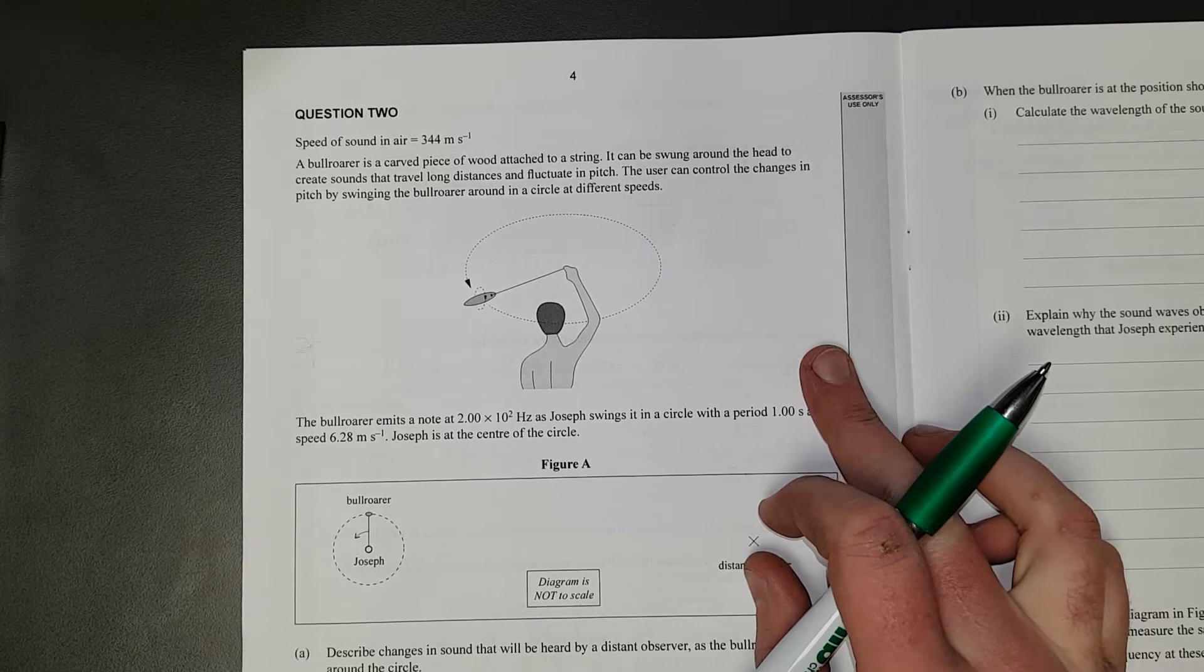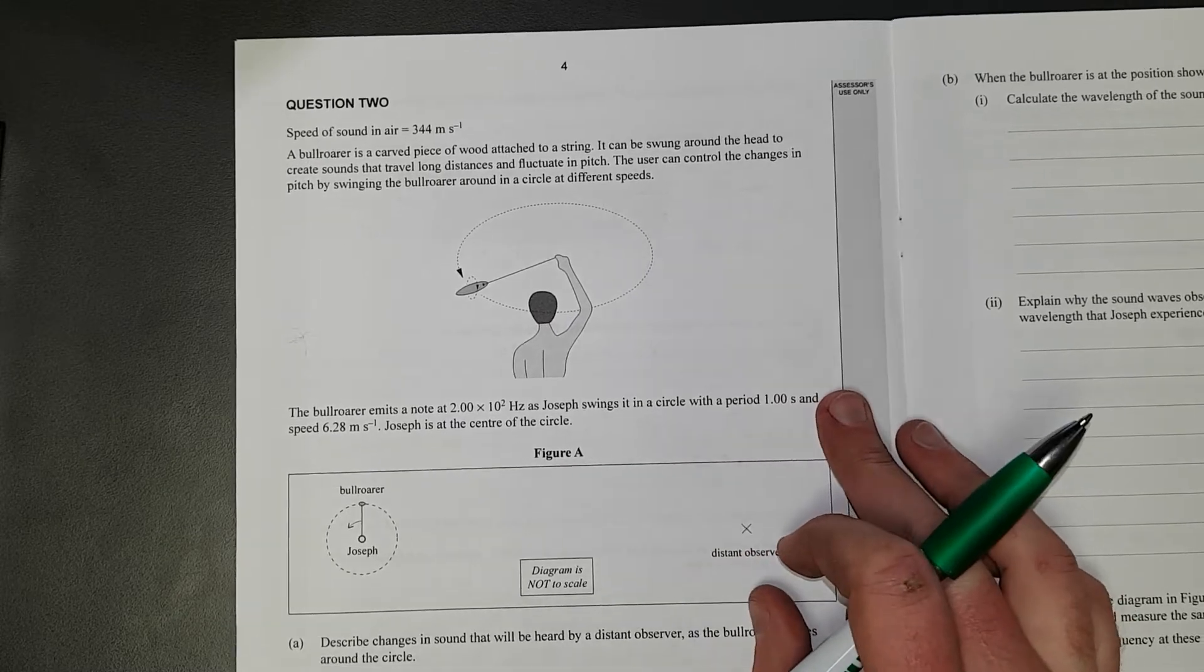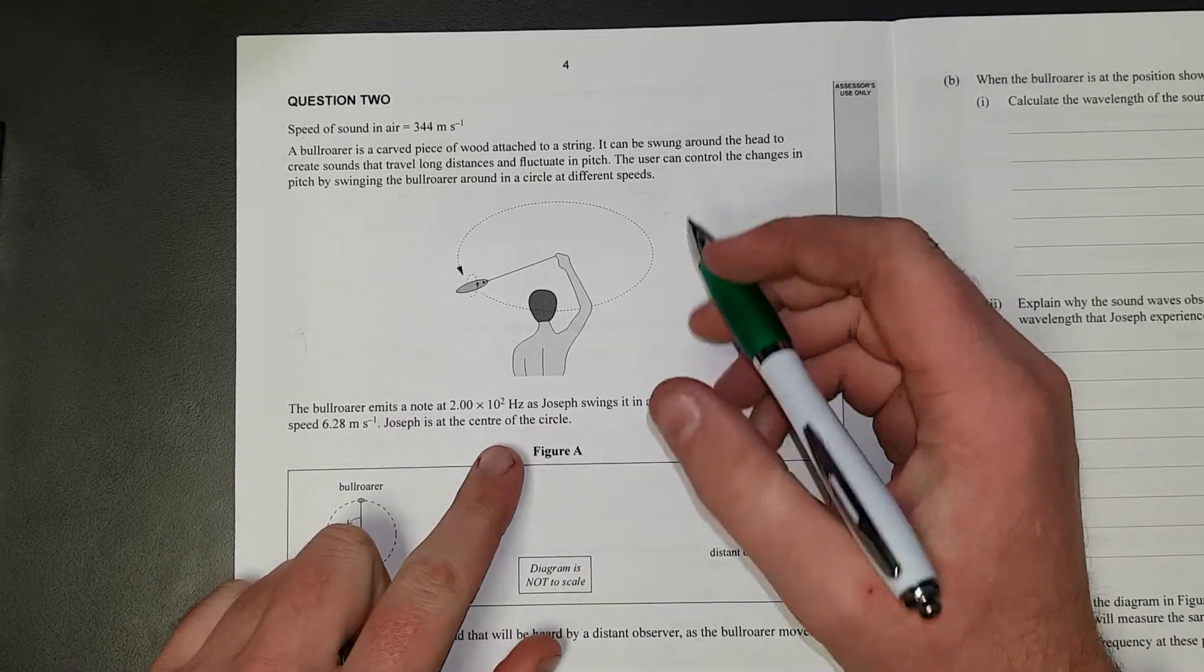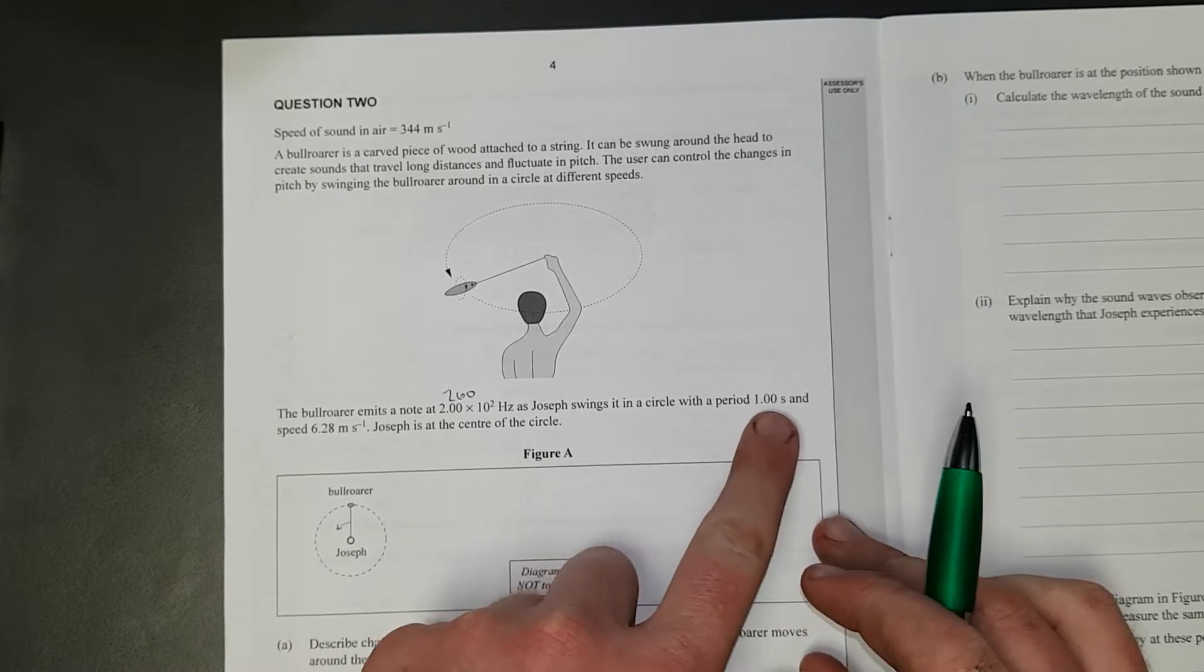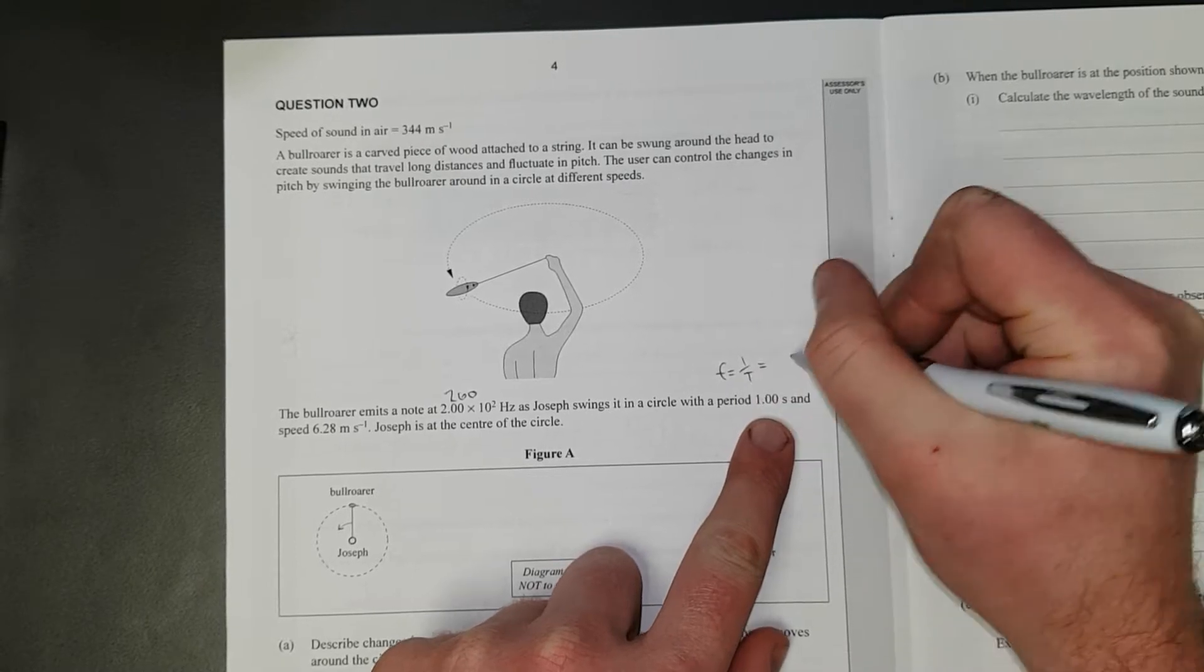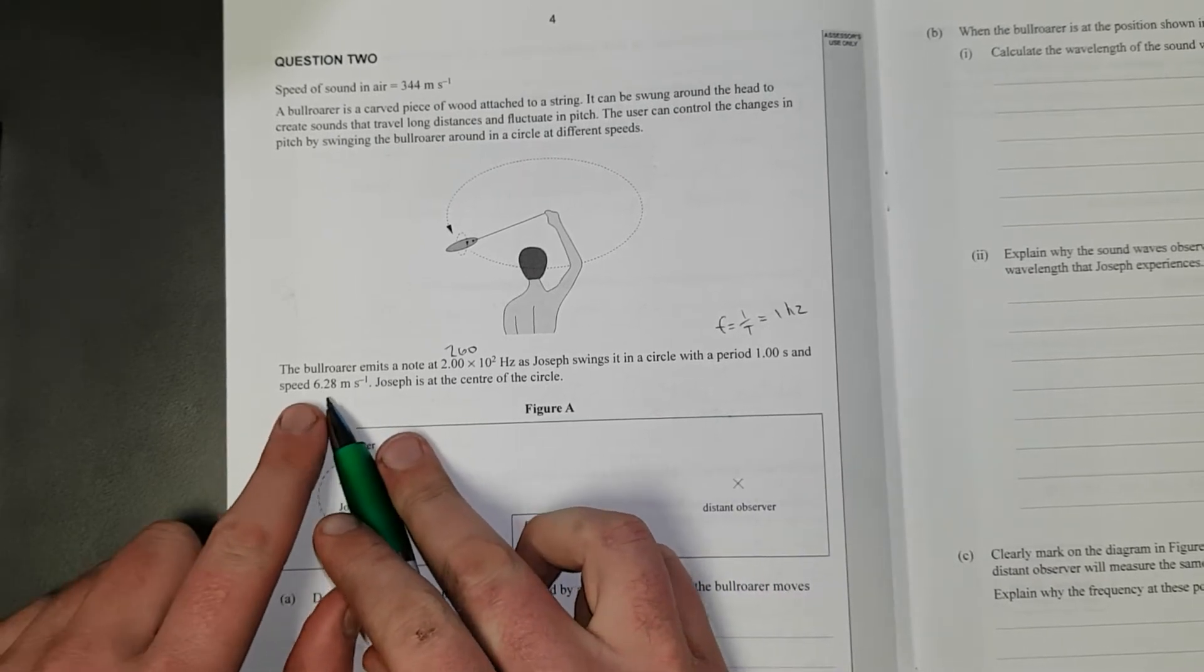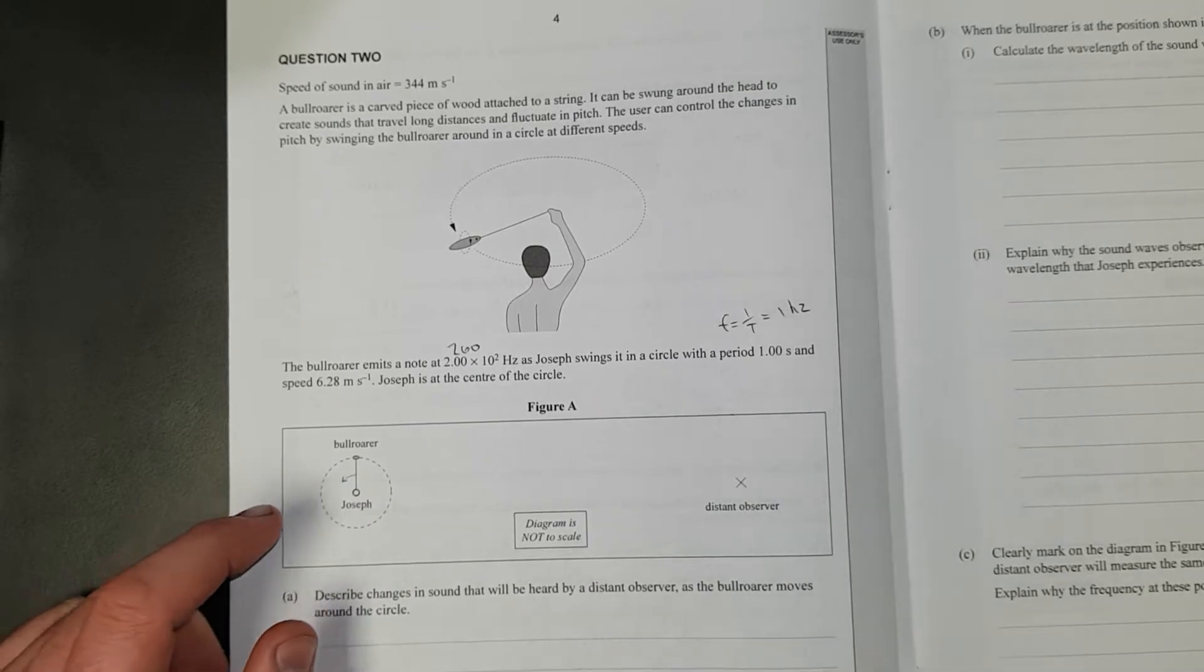The user can control the changes in pitch by swinging the bullroarer around in a circle at different speeds. The bullroarer emits a note at 200 Hz as Joseph swings in a circle with a period of 1 second. So F equals 1 over T which equals 1 Hz and the speed is 6.28 m per second and they're assuming he's going at constant speed.